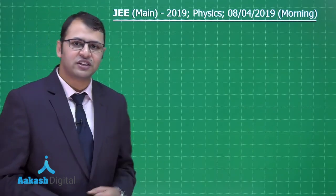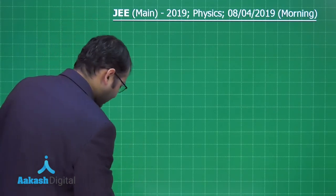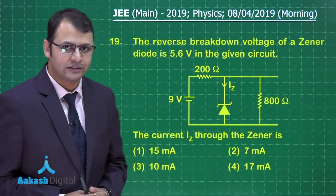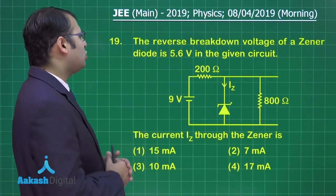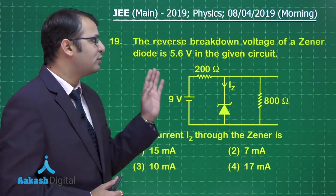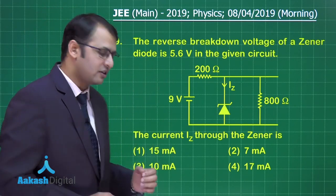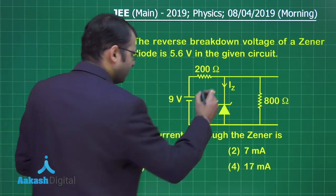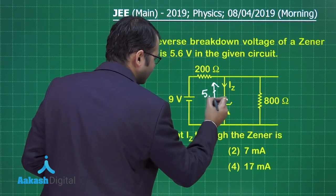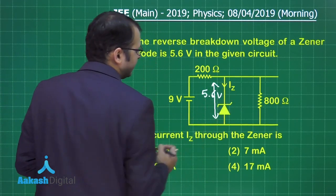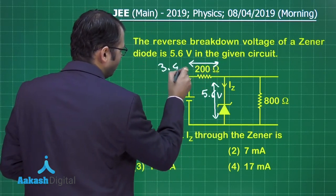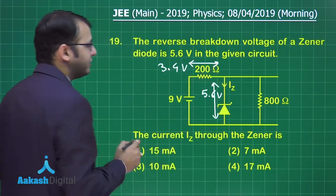Let's take question number 19, which belongs to the section of semiconductors. It's a pretty easy question. The reverse breakdown voltage of a Zener diode is 5.6 volts. In the given circuit, the potential difference across it is simply 5.6 volts, which means what is left is only 3.4 volts.